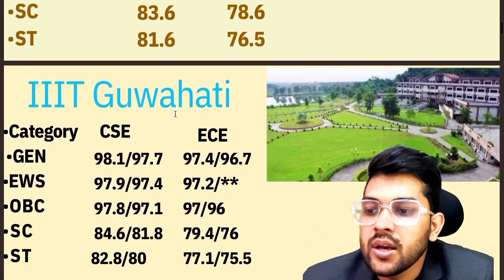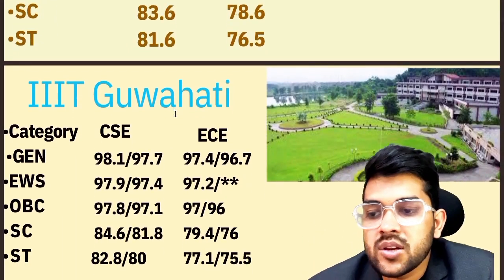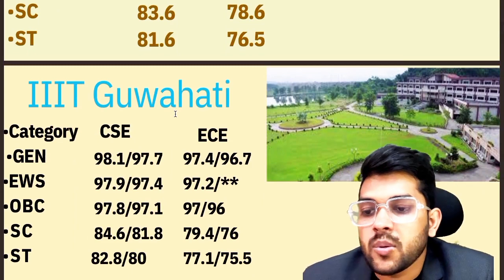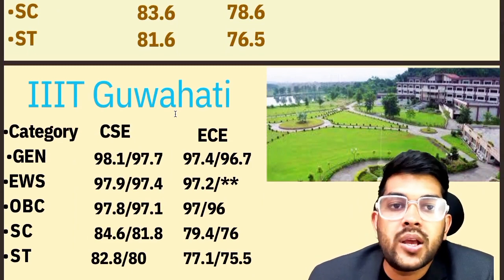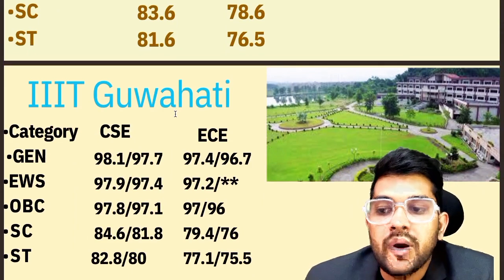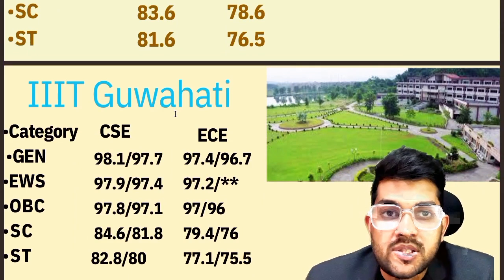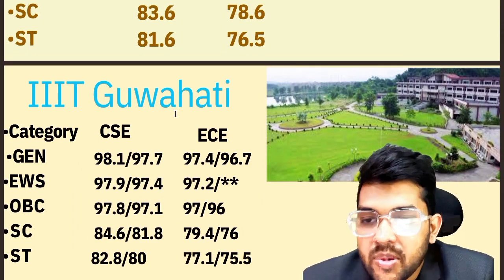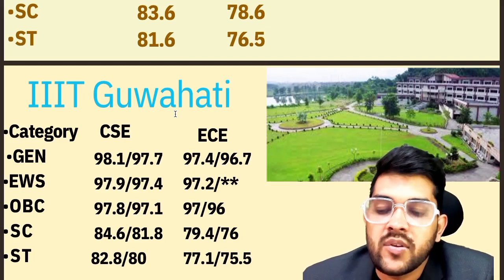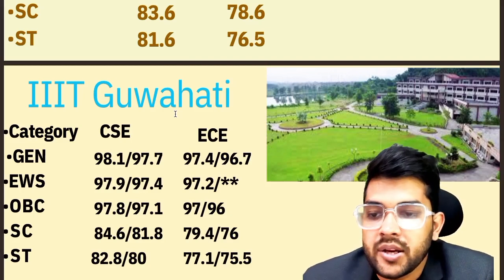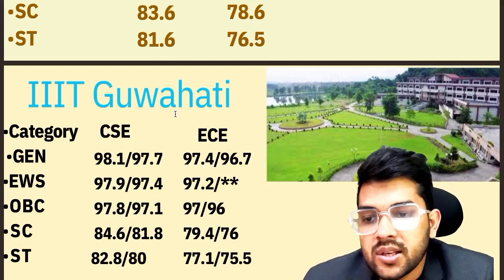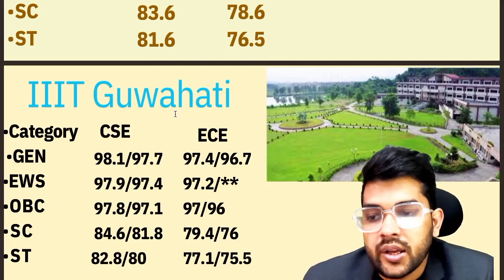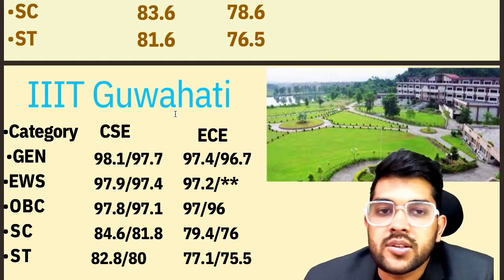For IIIT Guwahati: General — 98.1, and wherever a female cutoff is separately available I am providing it after the slash. For EC: 97.4 and 96.7. Some IIITs have reserved seats for female students, so a separate female cutoff is listed. Other categories you can check sign-wise on screen.